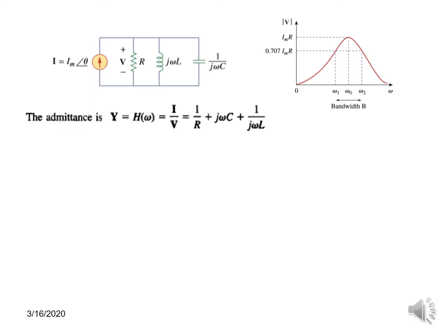Now the admittance of the circuit, which is also the transfer function H(ω), is given by I over V. We know that impedance is V over I, so admittance is I over V and it can be written as the inverse of all the elements: 1/R + 1/(1/jωC), so that will become jωC, plus 1/jωL.